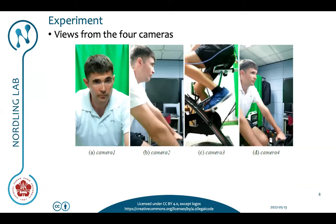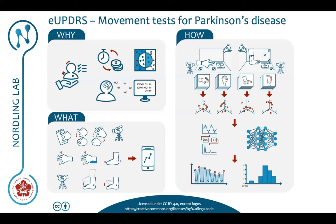Here you can see pictures of me when I'm carrying out the experiment. Now the second project from which I will be using data is our EU-PDRS project, where we have recorded data from Parkinson patients and normal control subjects in two different clinics in order to develop new video-based methods for automatic UPDRS scoring of the patients. The aim is to digitalize the today completely manual scoring system that is being used by physicians.